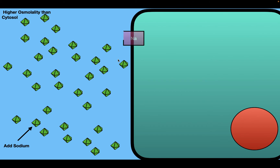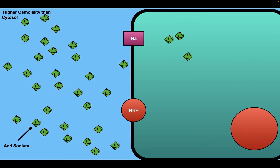Inside the cell, we have sodium leak channels, which are always open and allow sodium to move down its electrochemical gradient. So let's say three sodiums move into the cell. As you know, cells have the sodium-potassium pump, which uses ATP to pump three sodiums out and two potassiums in. So all of the sodium that entered the cell is pumped back out through the pump. As a result, sodium is said to be functionally impermeant to the cell membrane — even though sodium can pass through, all of it that enters is eventually pumped back out by the sodium-potassium pump.